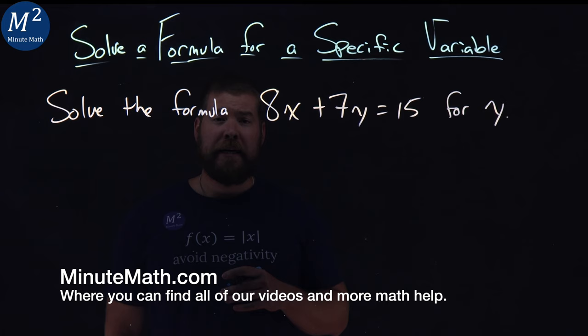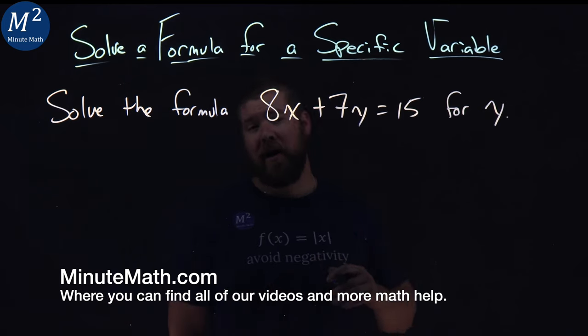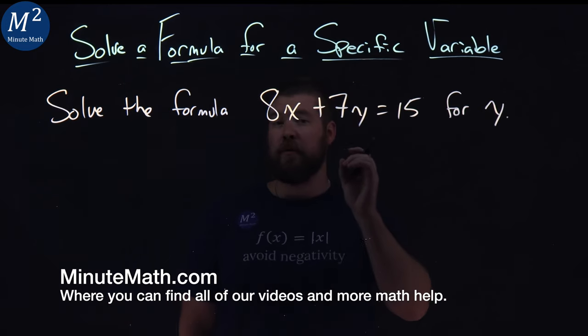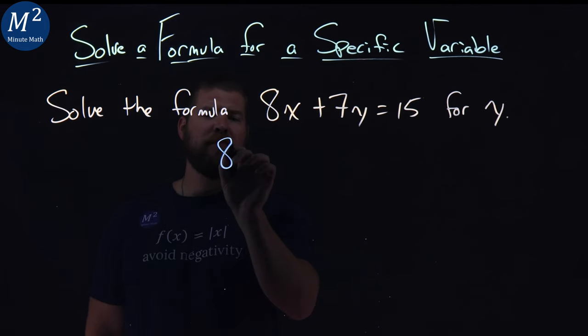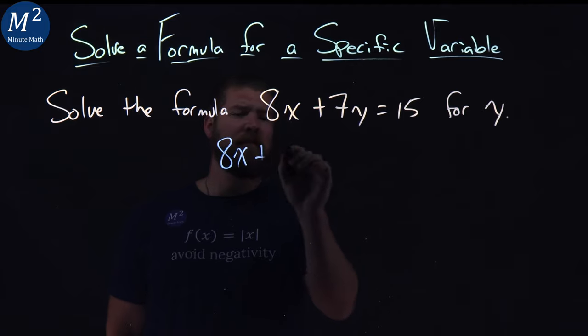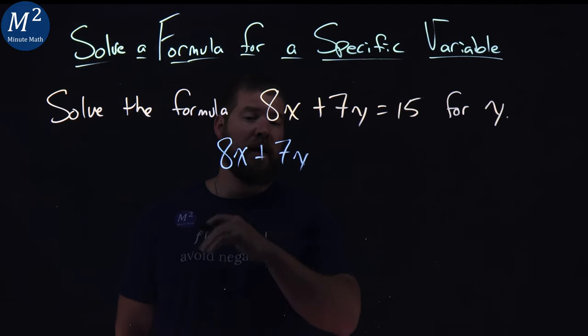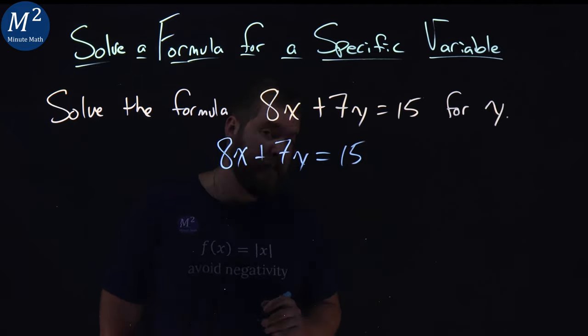We're given this problem right here, 8x plus 7y equals 15, and we want to solve this for y. Well, first thing I'd like to do is rewrite this, not within the sentence, but on its own, the equation, 8x plus 7y equals 15.